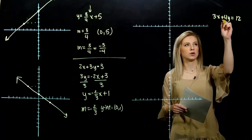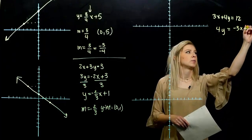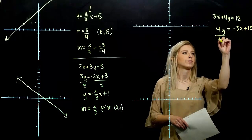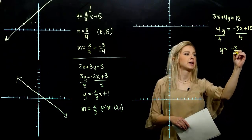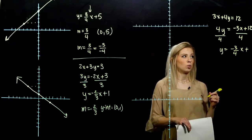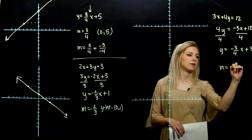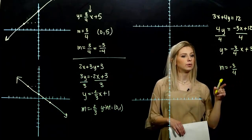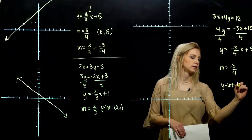You had to get y on its own. We have to move 3x to the other side. It will become negative. I want y all by its lonesome. Slope is minus three-fourths. The constant on the end or the y-intercept happens at 3. So again, slope, I have the option to give the negative up or down. And the y-intercept happens 0-3.